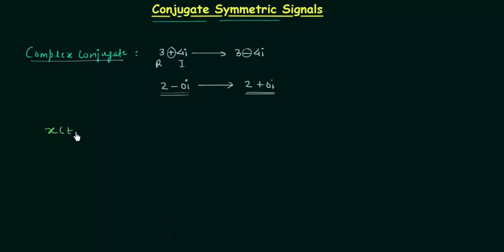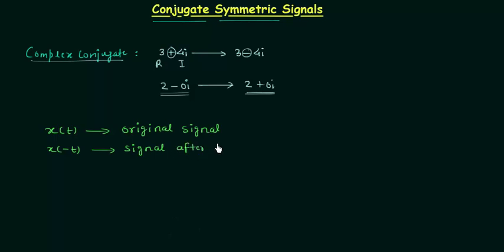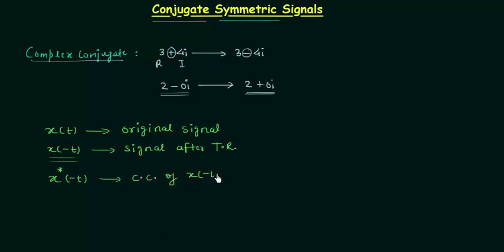Let's say the original signal is x(t). After this we will perform the time reversal, so we have x(-t). This is the signal after performing the time reversal. Once we have the time-reversed signal, we will obtain the complex conjugate. The complex conjugate is represented by an asterisk, and the complex conjugate of x(-t) is x*(-t).